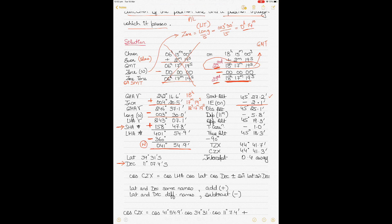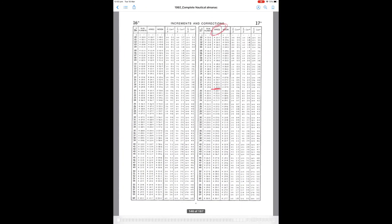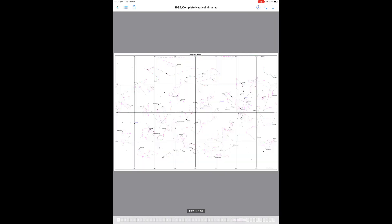Using the observed altitude of 45 degrees 25.1, apply the dip correction for height of eye of 11 meters. The dip correction is found on the first page of the almanac and is always negative — you subtract it. This gives an apparent altitude of 45 degrees 19.3. You can also get the total correction for the star from that same page for your apparent altitude.